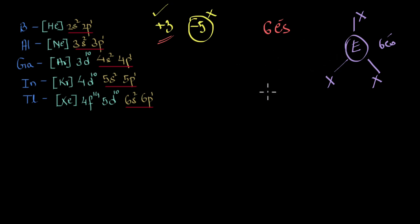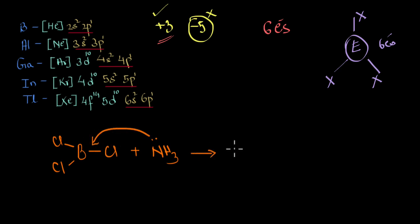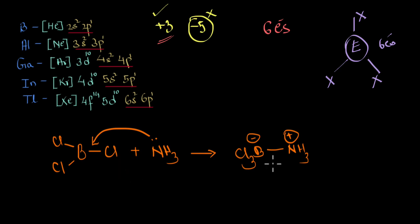A typical Lewis acid simply accepts a pair of electrons from an electron-rich species — a Lewis base — to form a complex or adduct. For instance, taking BCl3 as a Lewis acid and ammonia as a Lewis base: the lone pair of electrons on the nitrogen atom goes to boron, and we end up getting BCl3⁻ and NH3⁺. This is how a typical Lewis acid-base reaction looks.